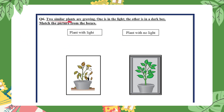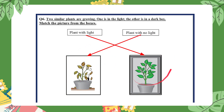You know that plants need light and the right conditions to be healthy. In question six, two similar plants are growing — one is in the light, the other is in a dark box. Match the picture from the boxes. A healthy plant has strong roots, stems, and leaves. A plant with no light would look unhealthy — it may have leaves that are wilting and yellow.